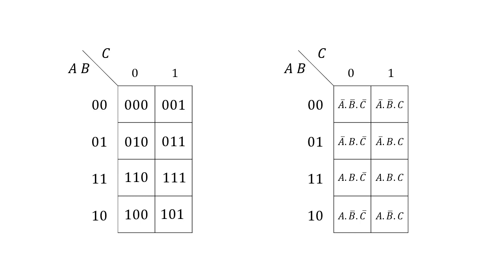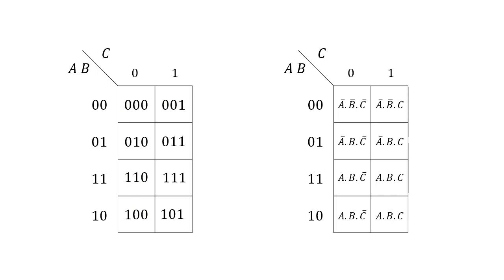Each cell represents a different row, just like reading off a map with coordinates. The A and B values label the rows, and depending on which column it is, we use the relevant value of C. There are eight possible binary values and we can write them in terms. For the top-left cell when it's 0,0,0, all variables are complemented: not-A and not-B and not-C. For the case where we've got 1,1,1, the minterm is A, B, C. So if it's a 1, we have the variable itself; if it's a 0, we have the complement.